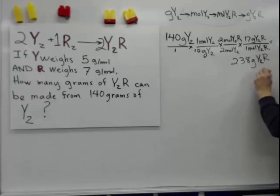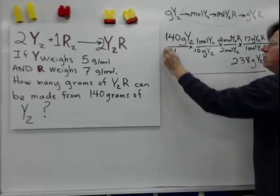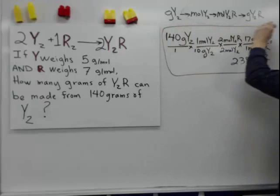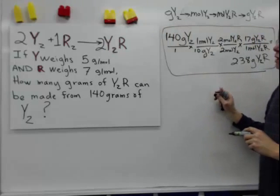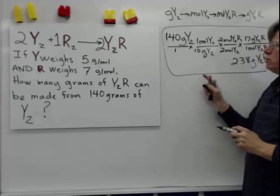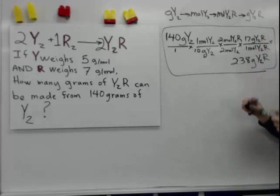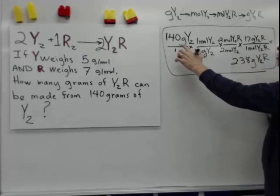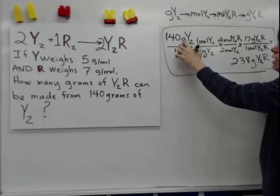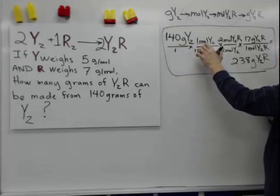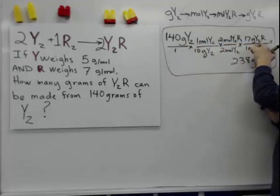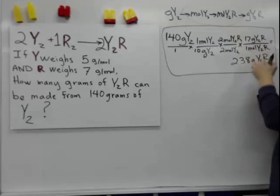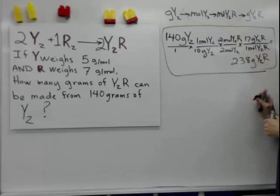This is a very standard, typical arrangement for working on stoichiometry. This pattern appears in almost all problems: converting from grams to moles, then moles to moles, and then from moles to grams of the product you're looking for.